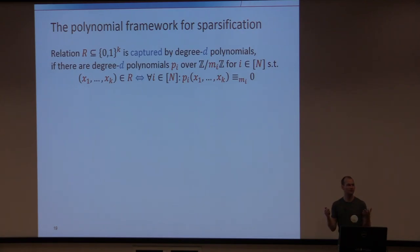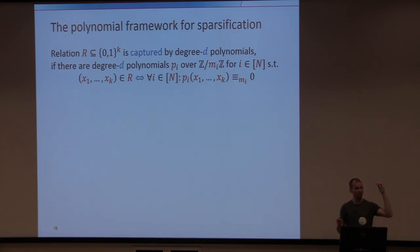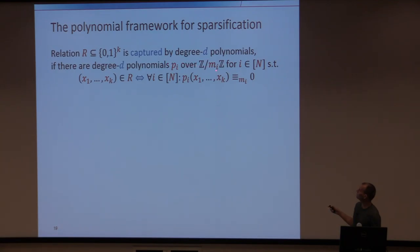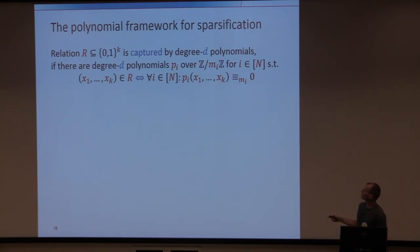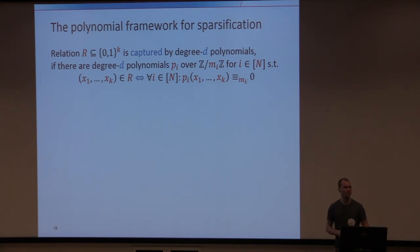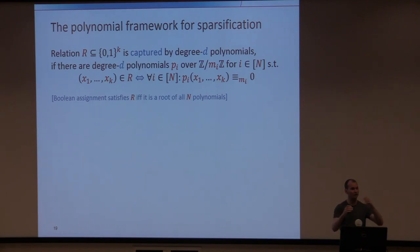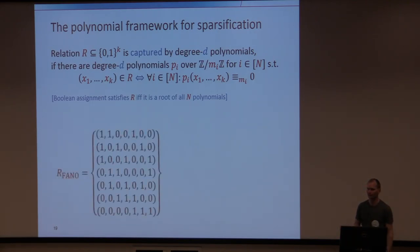Here is the formal definition of the polynomial-based sparsification framework in full generality. A relation is captured by degree-d polynomials if there exists a sequence of degree-d polynomials — each over integers mod some modulus of your choice — such that a 0/1 assignment is a satisfying assignment of the relation if and only if all polynomials evaluate to 0 on it under the corresponding moduli. So a Boolean assignment satisfies the relation precisely when it's a root of all polynomials.